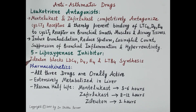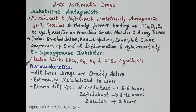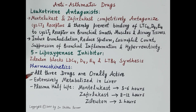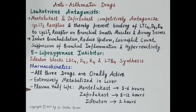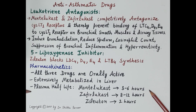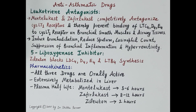The 5-lipoxygenase inhibitor zileuton blocks synthesis of leukotriene C4, D4, E4, and leukotriene B4. Regarding pharmacokinetics, all three drugs — montelukast, zafirlukast, and zileuton — are orally active and extensively metabolized in the liver. The plasma half-life of montelukast is 3–6 hours, zafirlukast is 8–12 hours, and zileuton is 2 hours.